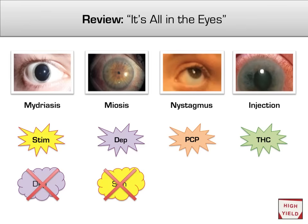As a final review for recognizing toxidromes on boards, remember the phrase 'it's all in the eyes.' If the pupils are dilated, you're dealing with stimulant intoxication or depressant withdrawal. Conversely, constricted or pinpoint pupils mean opiate overdose or stimulant withdrawal. Nystagmus in the context of substance abuse is likely PCP. And conjunctival injection is probably marijuana. Know these well — they will help you on tests.